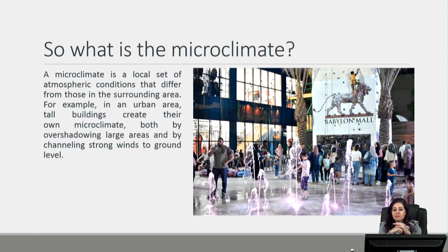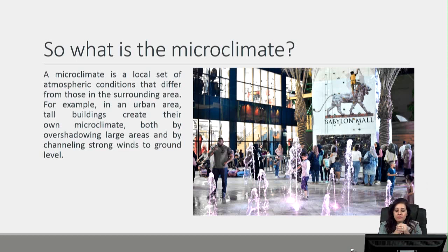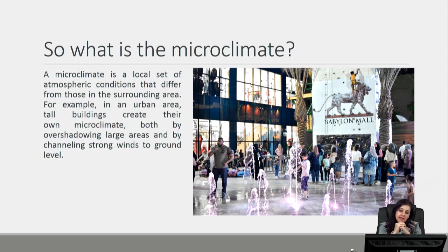The microclimate is the area affected by the building — it may be surrounded by or within a building, but it is affected by the design. One example I always give to students is Babylon Mall here in Baghdad. It has a court in front of the mall with added fountains, and it's really easy to notice the drop in temperatures when you enter that space. There is a very big difference in temperatures between the road outside the mall and that court, and if you're in there, you can enjoy considerably low temperatures.